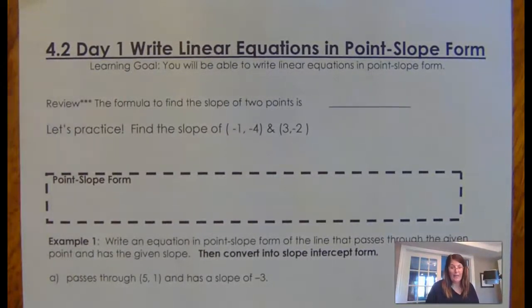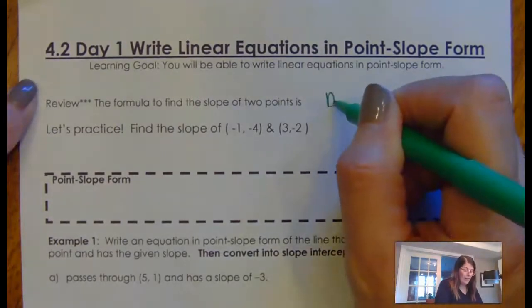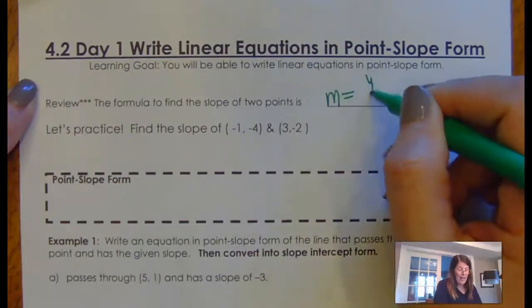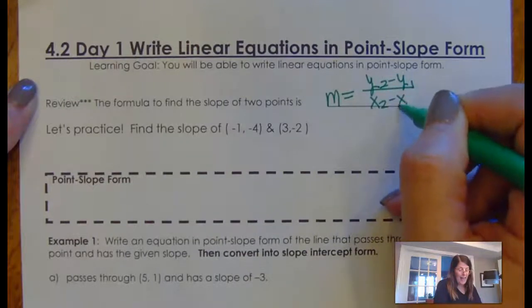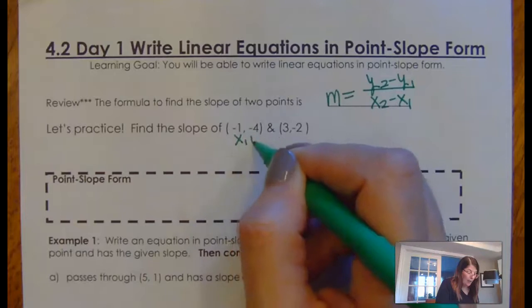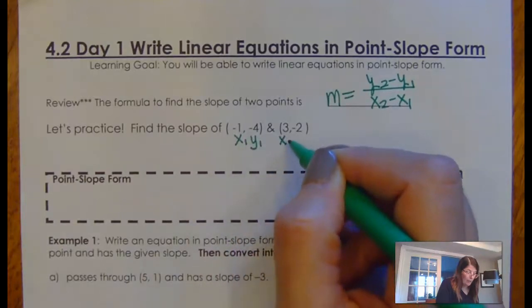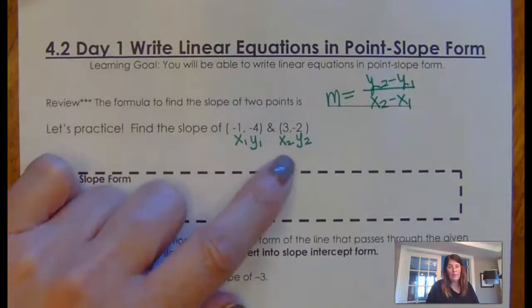Okay, first of all, before we get started, let's talk about slope again. We have to be good at slope in order to be able to write equations of lines. So the formula for slope, remember we always use the letter M, and you subtract the Y's on top and the X's on the bottom. So whenever I go to do this, sometimes it helps to label your ordered pairs, X1, Y1, X2, and Y2.